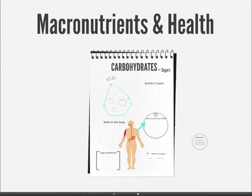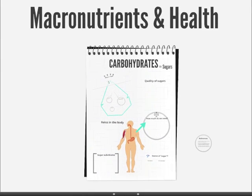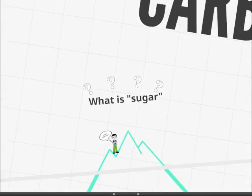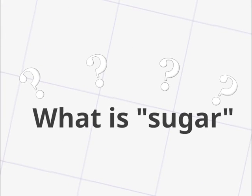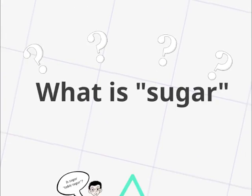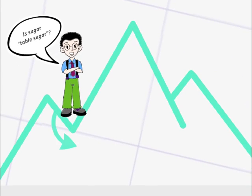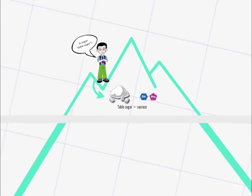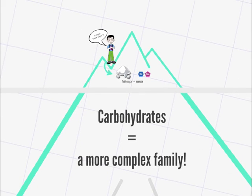Carbohydrates: What is sugar? What we call sugar, which we typically use as table sugar, comes from a more complex family: the carbohydrates.